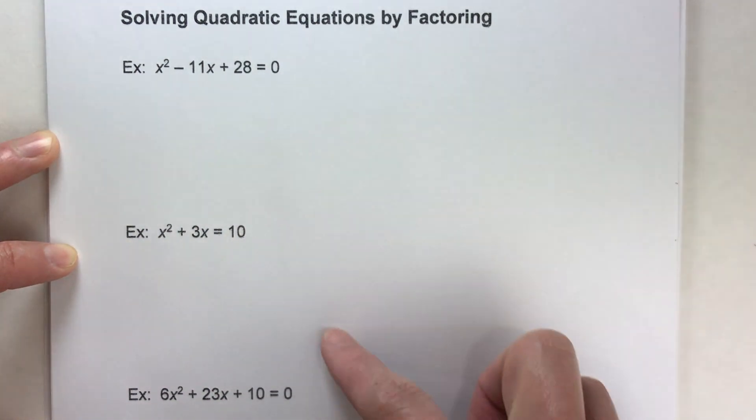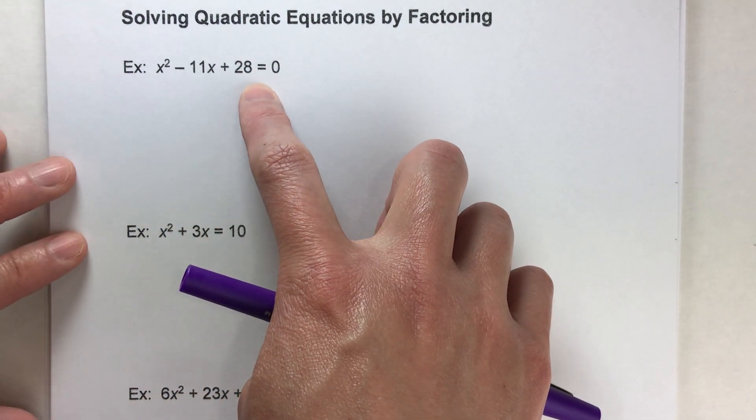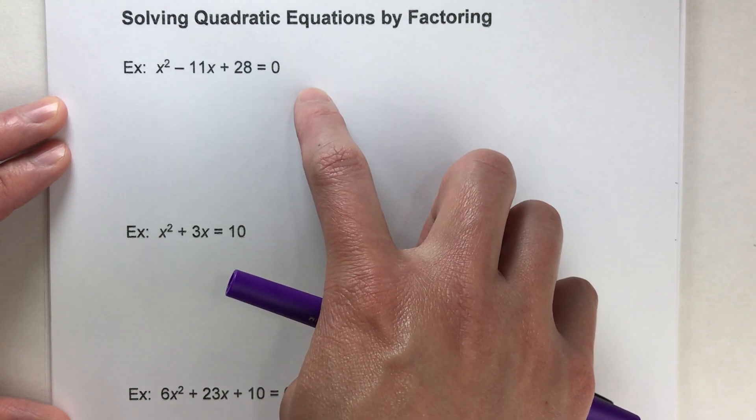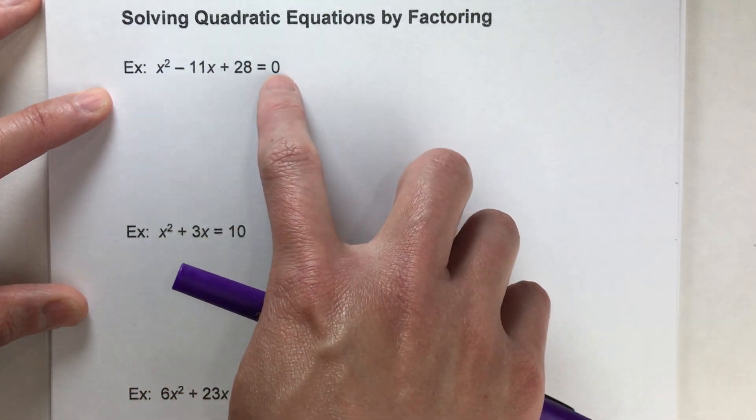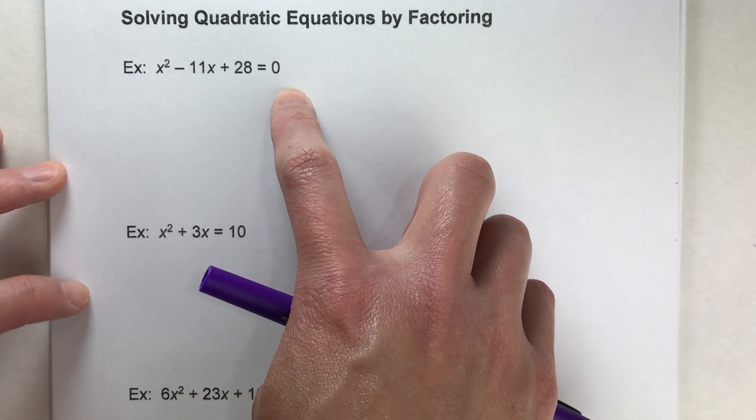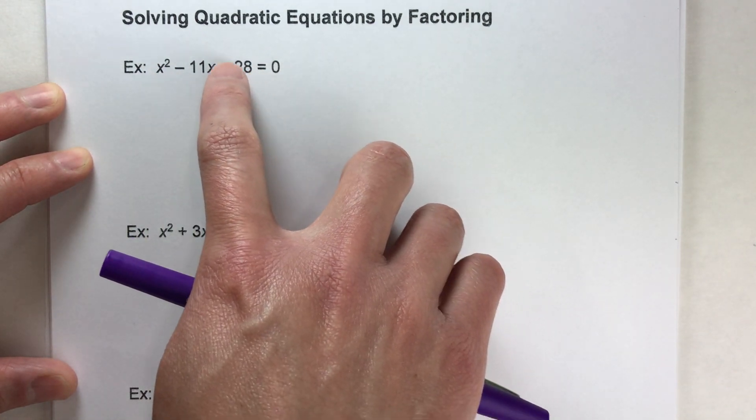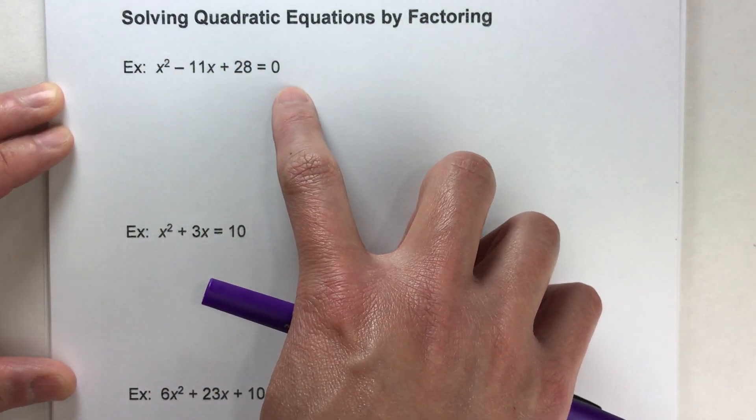Let's go through and solve these. For this first one, x squared minus 11x plus 28 equals zero. Your first step when solving a quadratic by factoring is to get all your terms on one side of the equal sign and have it equal to zero. This is a little counterintuitive because usually when you solve algebra equations you want to get x on one side and all the other numbers on the other.